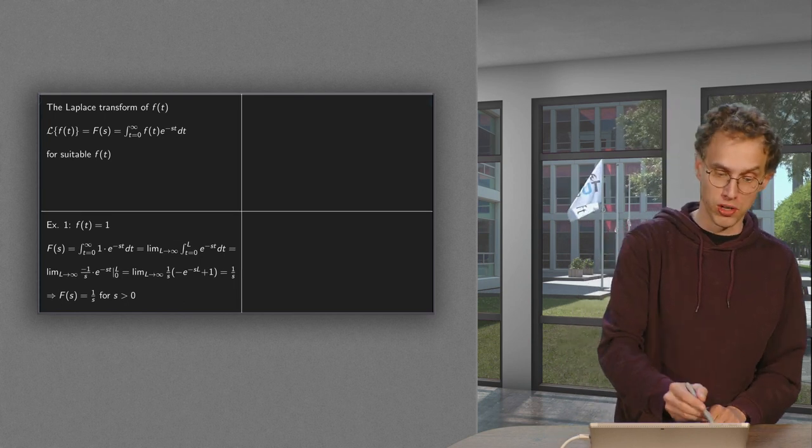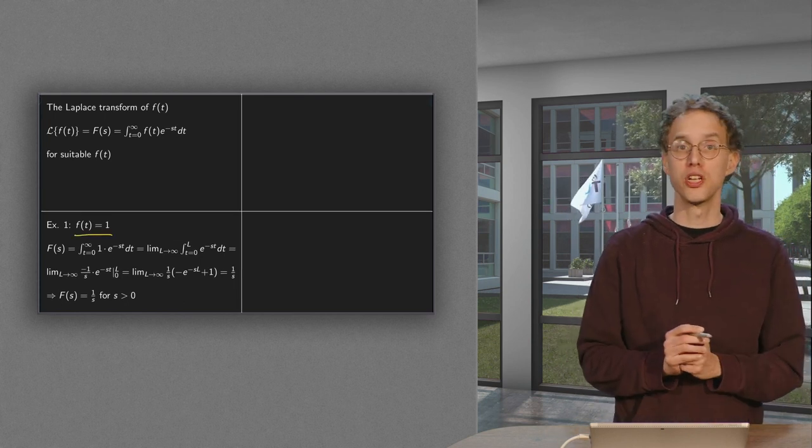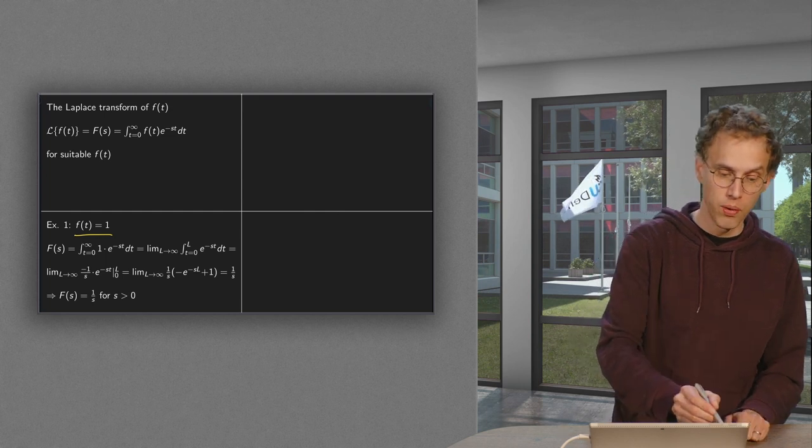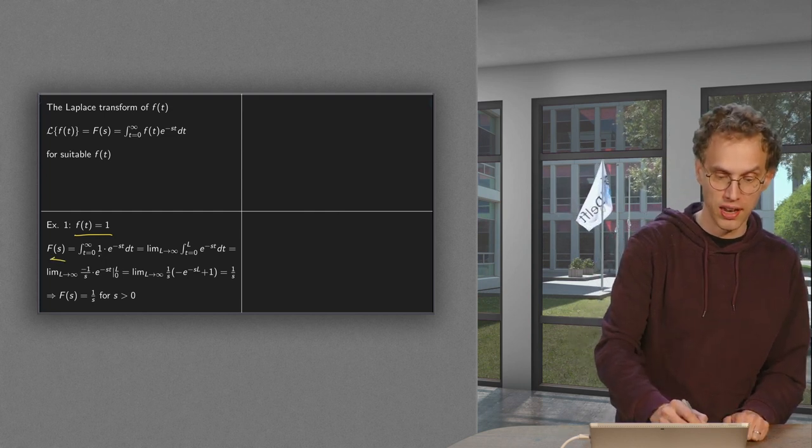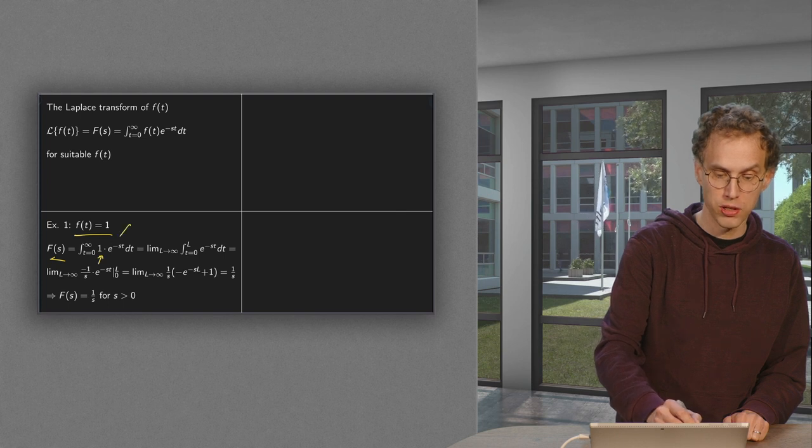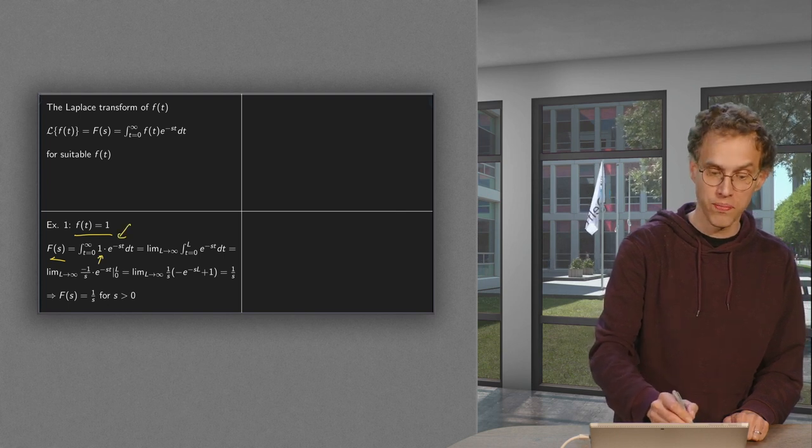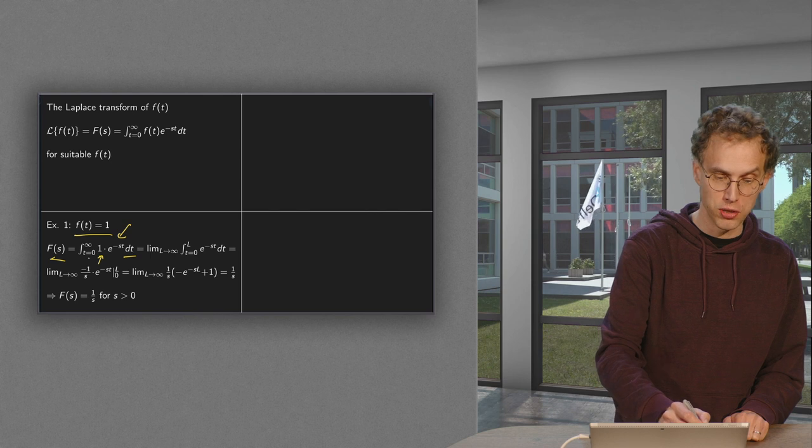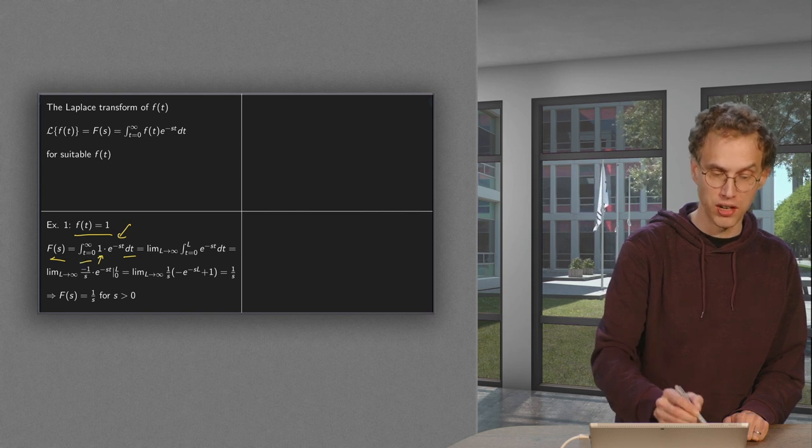Simplest function, of course, f(t) is just 1. So what happens then? Well, what do we do? ℒ{f}(s): we put the f(t) here, we multiply with e to the power minus st, we integrate with respect to t from 0 to infinity. So there we go.